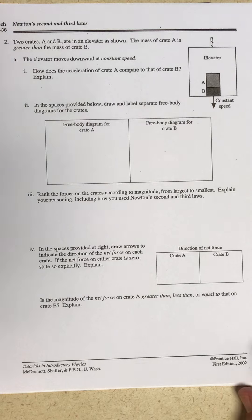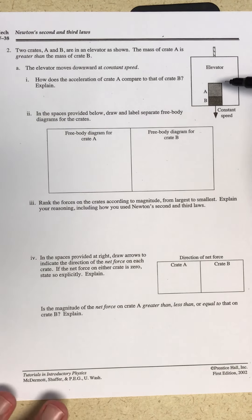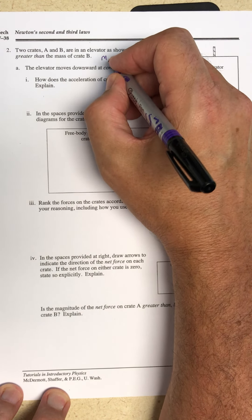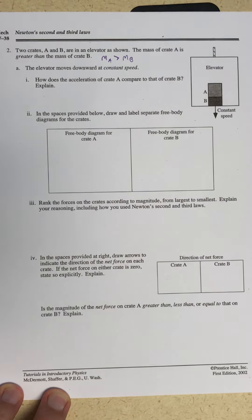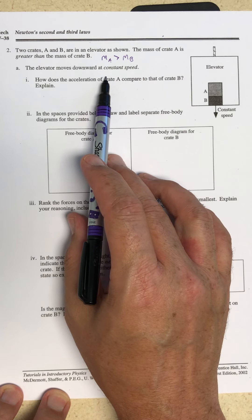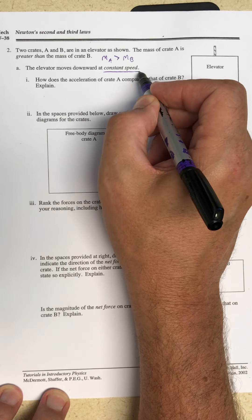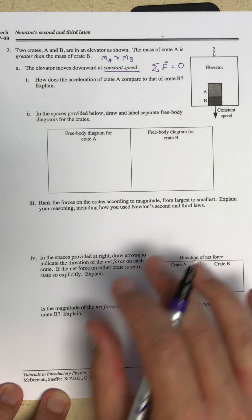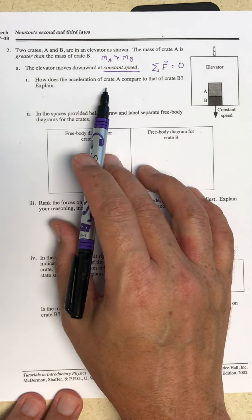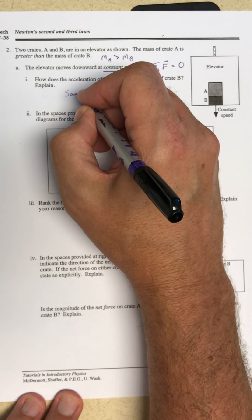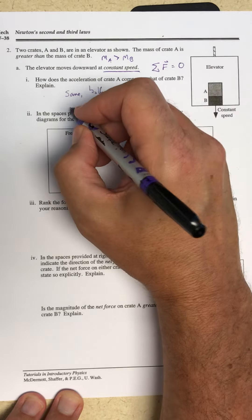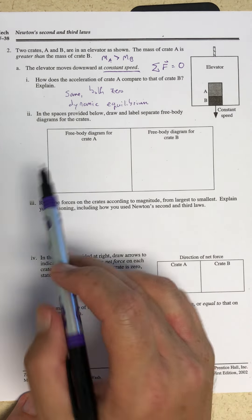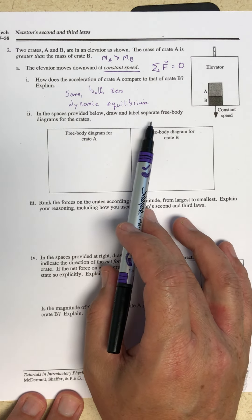Now we're going to think about an elevator. I have two crates A and B in the elevator. The mass of crate A is greater than the mass of crate B. The elevator moves downward at a constant speed, so this is a case of dynamic equilibrium. The sum of all the forces equals zero because the acceleration is zero because the velocity is constant. The accelerations of crate A and crate B are the same — both zero — and this is an example of dynamic equilibrium.